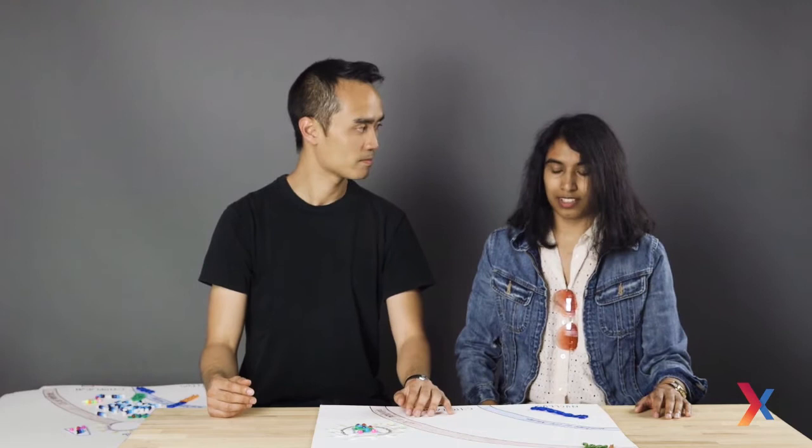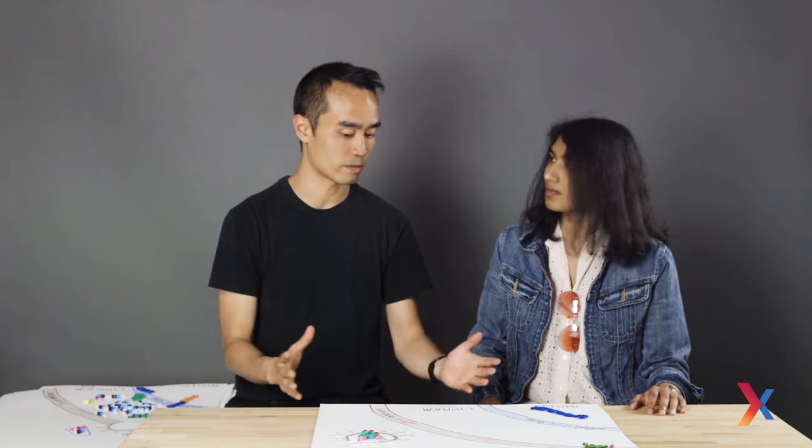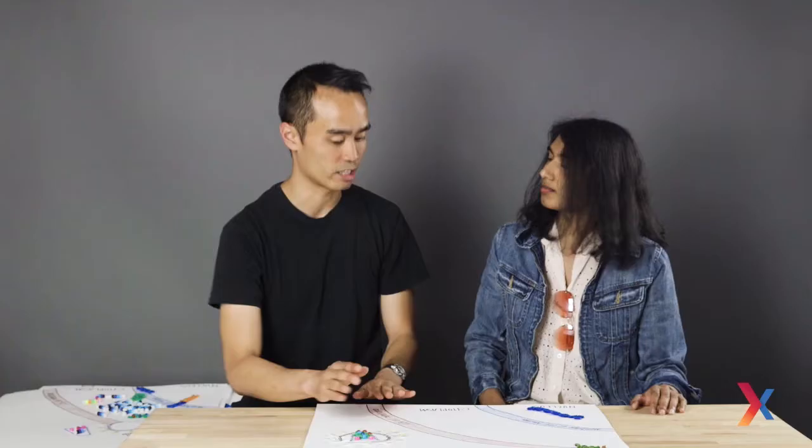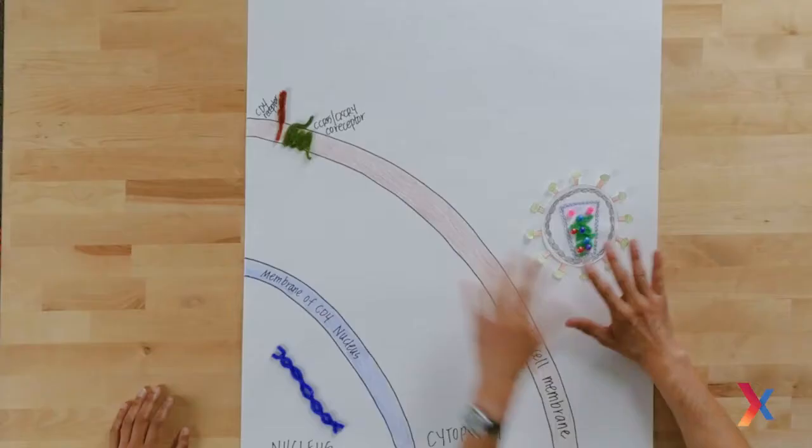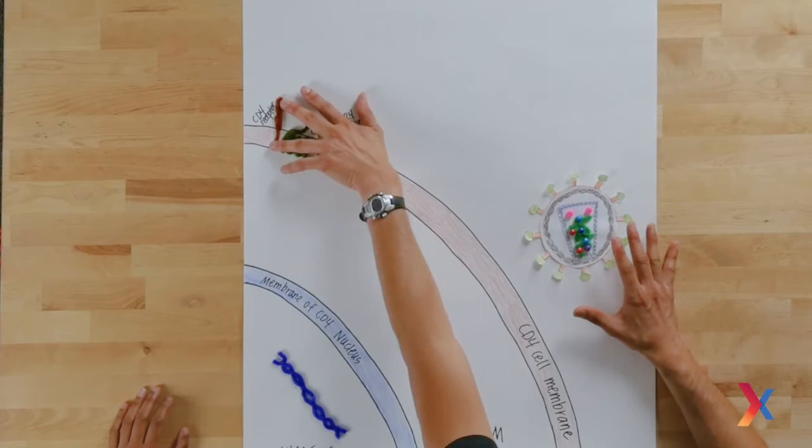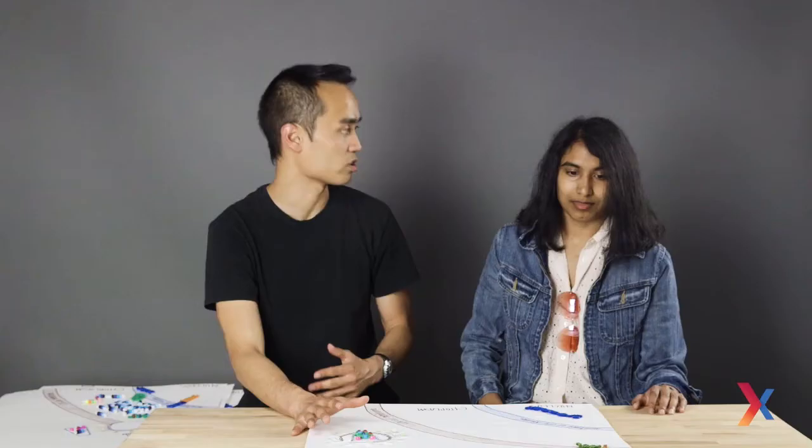And what type of cells does HIV attack? So HIV broadly attacks a group of cells known as CD4 cells. CD4 cells are distinguished by the presence of a CD4 receptor and are immune cells, specifically two different types: T cells as well as macrophages. The CD4 receptors help these cells recognize foreign pathogens and activate them.